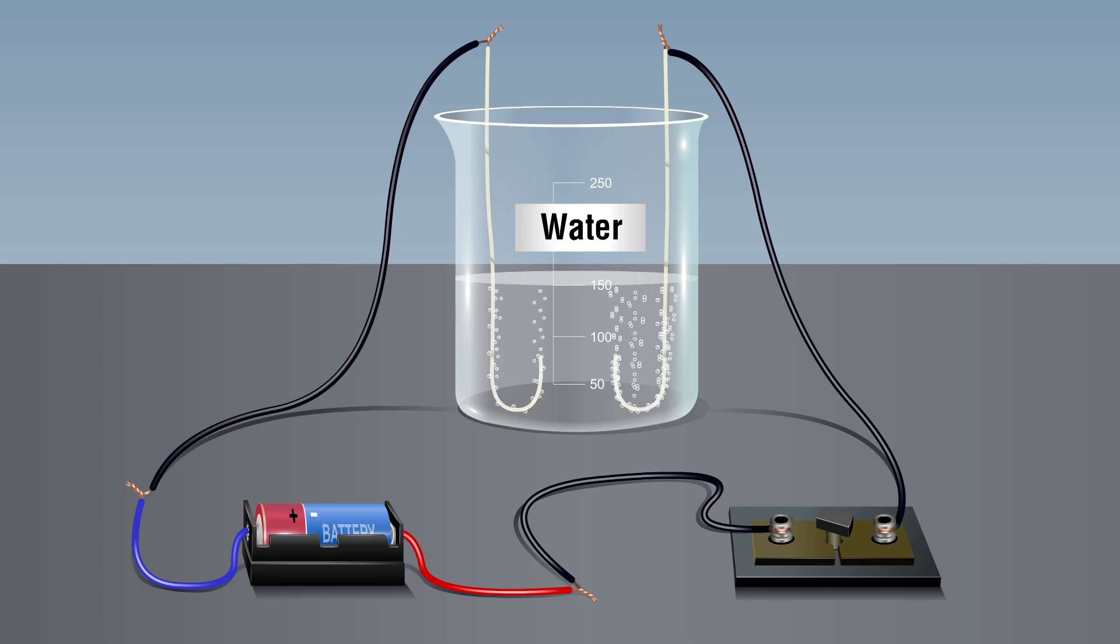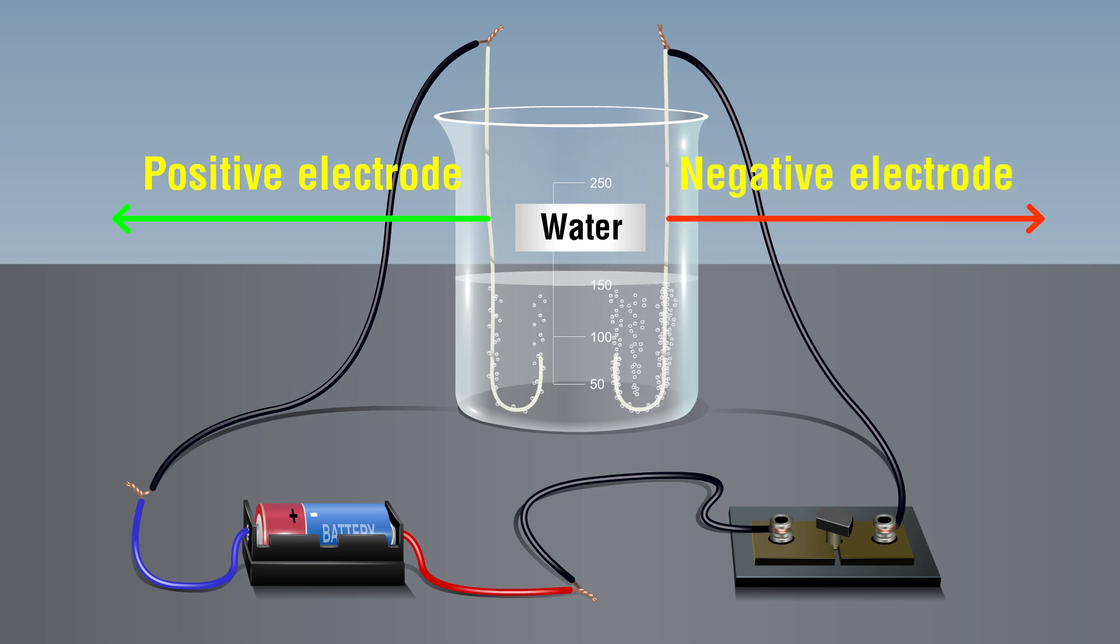The wire connected to the positive terminal of the battery is called the positive electrode and the wire connected to the negative terminal of the battery is called the negative electrode.